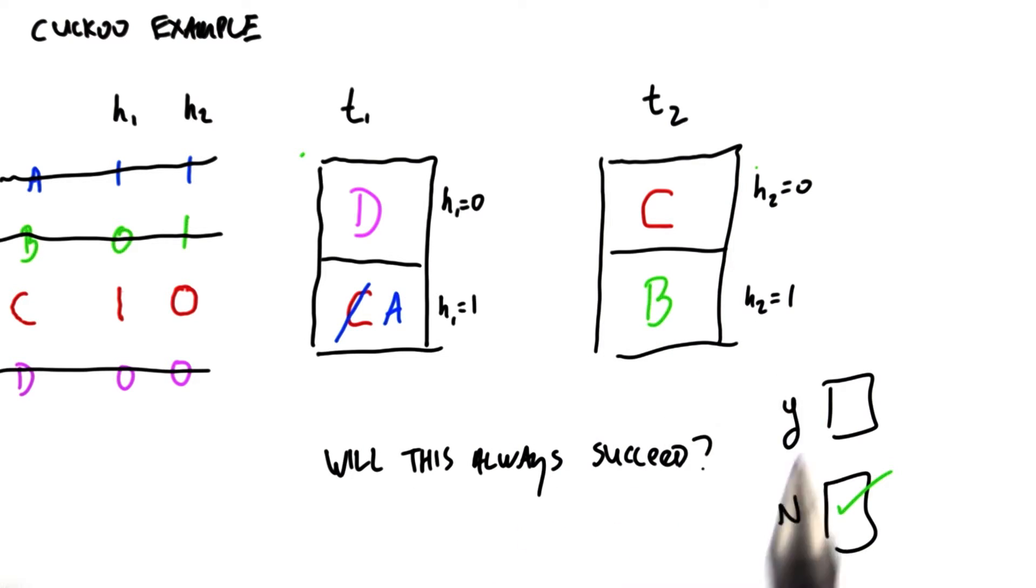And so if that's the case, then we just stop, we choose new hash functions, and we start over. And again, there's very nice probabilistic guarantees about how often this is going to finish.